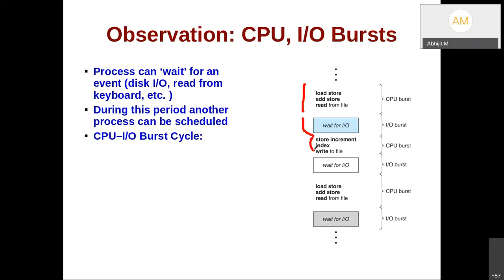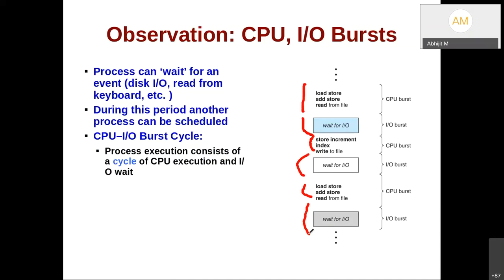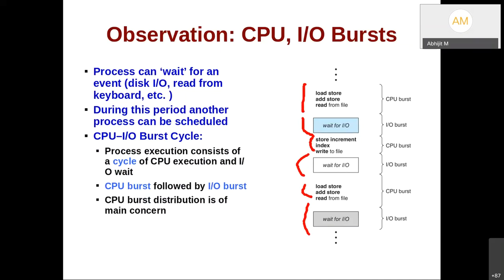Then again some computation happens (CPU burst), again some IO, again some computation, again some IO — processes keep alternating between CPU burst and IO burst. Process execution consists of a cycle of CPU execution and IO wait. What is of concern for scheduling algorithms is the CPU burst distribution, because it is a CPU scheduling algorithm. We are not bothered about the duration of IO or waiting; we are bothered about the duration for which the process wants to execute. So we focus on the CPU burst, not on the IO burst.